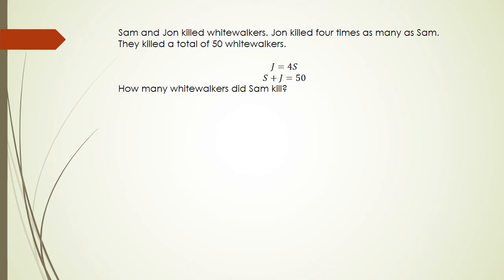So same thing as before guys. We know that j is equal to 4s and our second equation is s plus j equals 50. Okay, so what we do is we substitute j because j equals 4s. We're going to have s plus 4s equals 50 which means we've got 5s is equal to 50. So therefore s is equal to 50 divided by 5 which is 10.